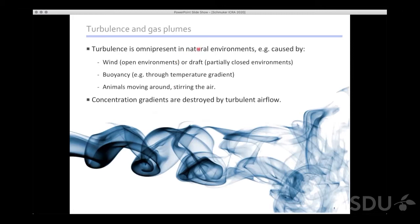In any natural environment we have turbulence. Turbulence can be caused by wind in open environments, draft in partially closed environments, buoyancy through temperature gradients, and convection. There are also things and animals moving around in the room, steering the air. So concentration gradients are destroyed by turbulent airflow. In natural environments, we cannot use concentration gradients for navigation.